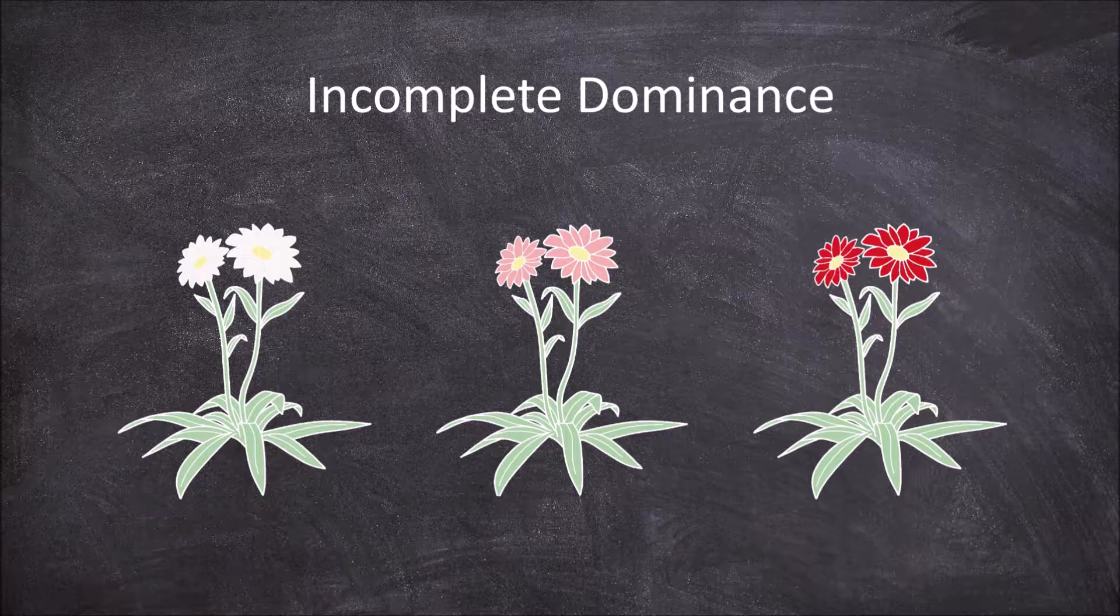In traits that are incompletely dominant, an intermediate form of both traits is observed in heterozygous individuals.